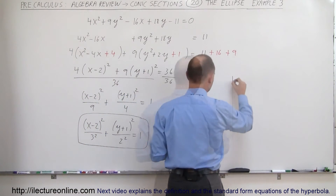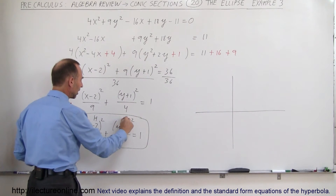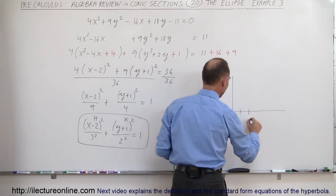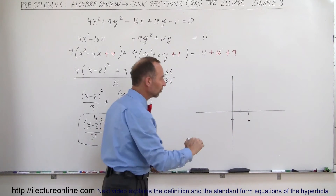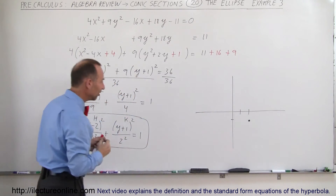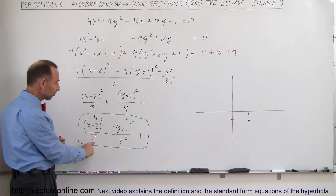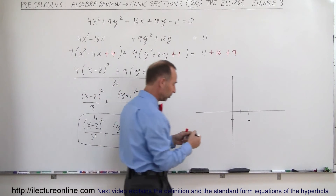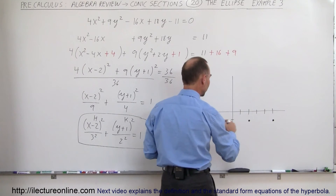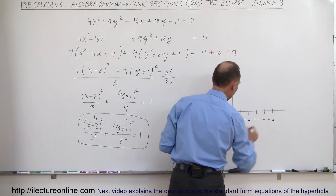Now we graph the ellipse. The center is at (h, k) = (2, negative 1). The major axis is horizontal. The length of the major axis is twice the value of a, which is 3, so we go plus or minus 3 from the center along the x-direction. That gives vertices at 2 plus 3 equals 5, and 2 minus 3 equals negative 1 — so the major axis vertices are at (5, negative 1) and (negative 1, negative 1).